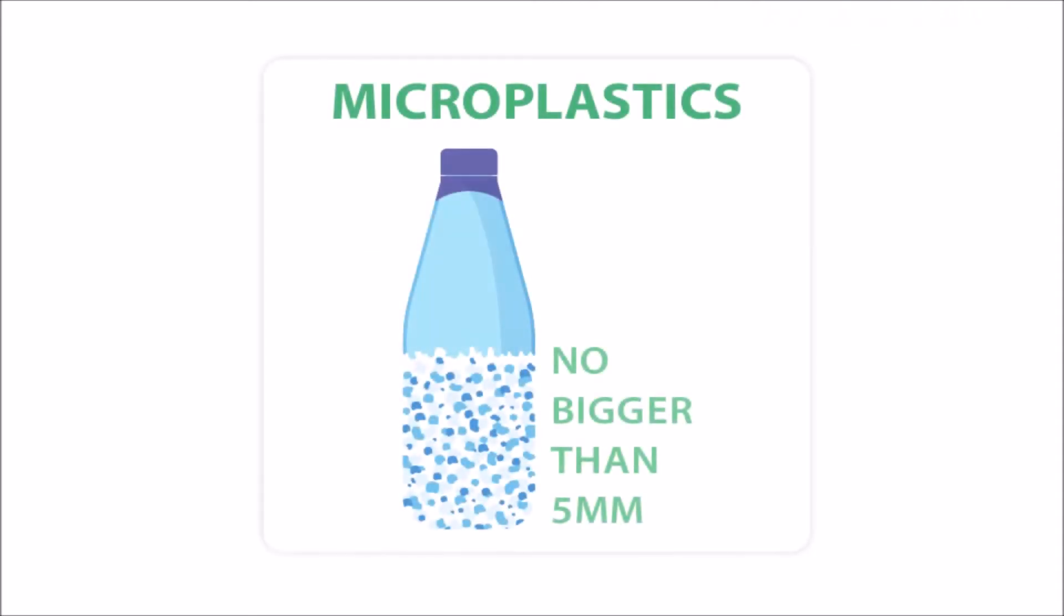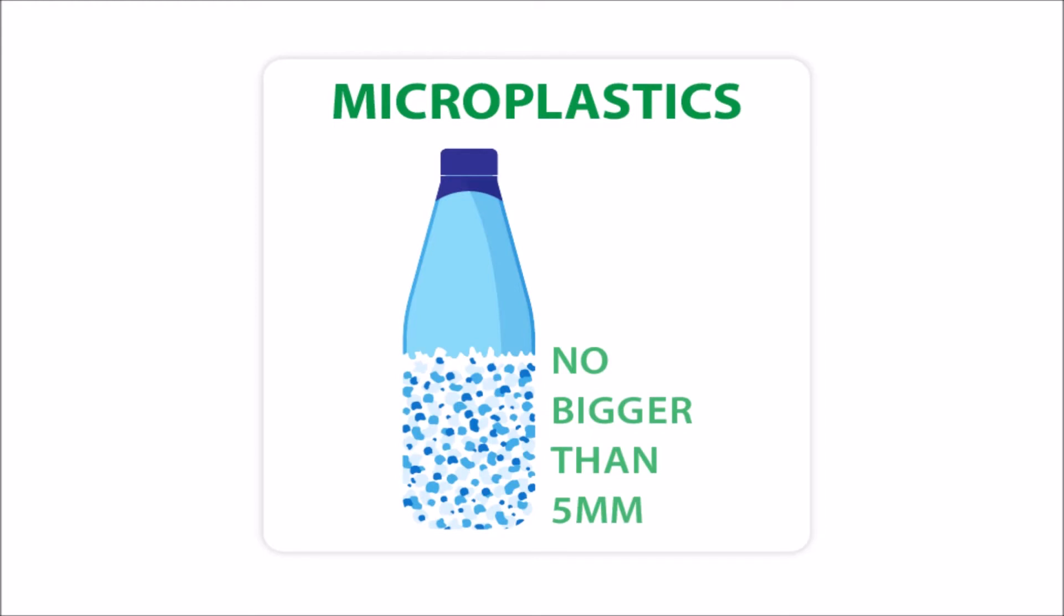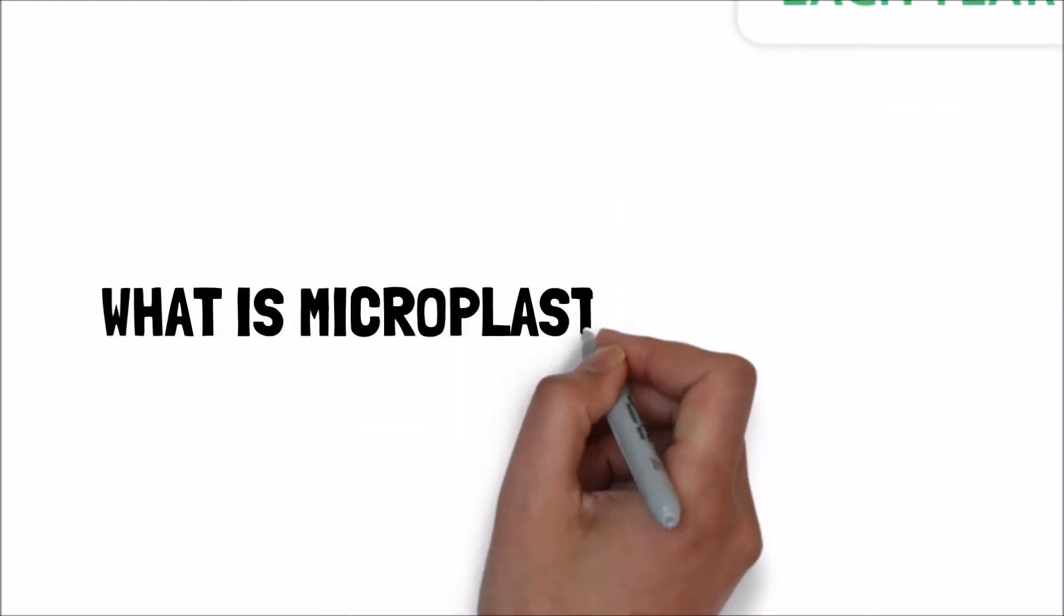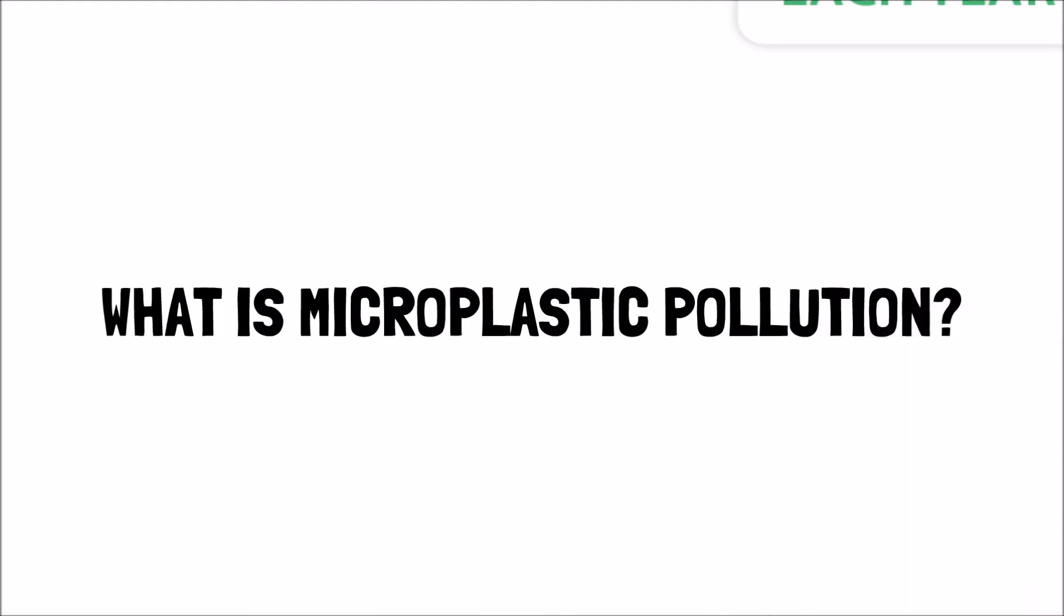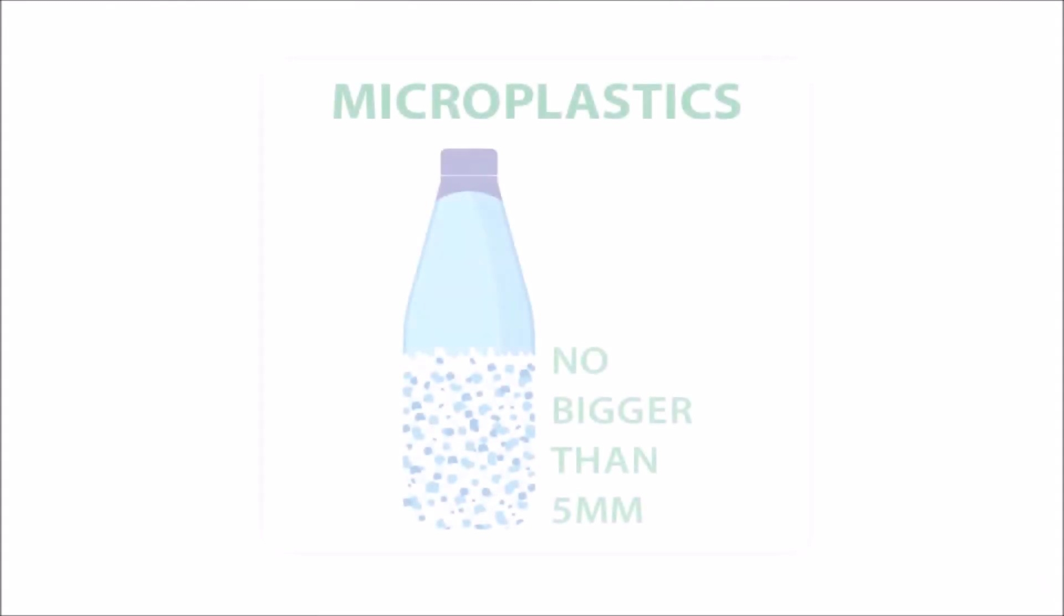In fact, many experts are already reporting that microplastic pollution has found its way into our food chain. What is microplastic pollution? Microplastics are tiny particles and fragments of plastic that are no bigger than 5 millimeters.